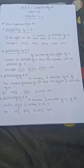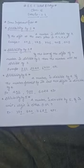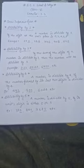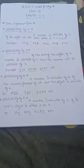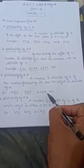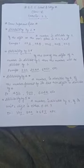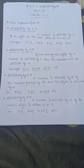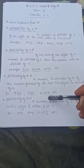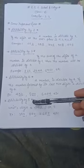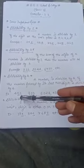Divisibility by 4: A number is divisible by 4 if the number formed by its last two digits is divisible by 4. For example, if the last two digits of a number are 52...